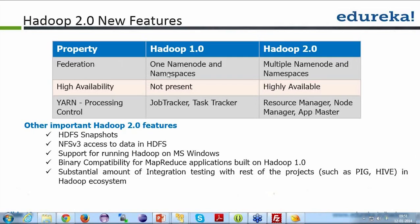High availability is another key feature. The Hadoop NameNode is generally available, but if it goes down there is a problem. That's where the standby NameNode comes into play — it handles the failure scenario, which has been discussed in detail throughout the classes.